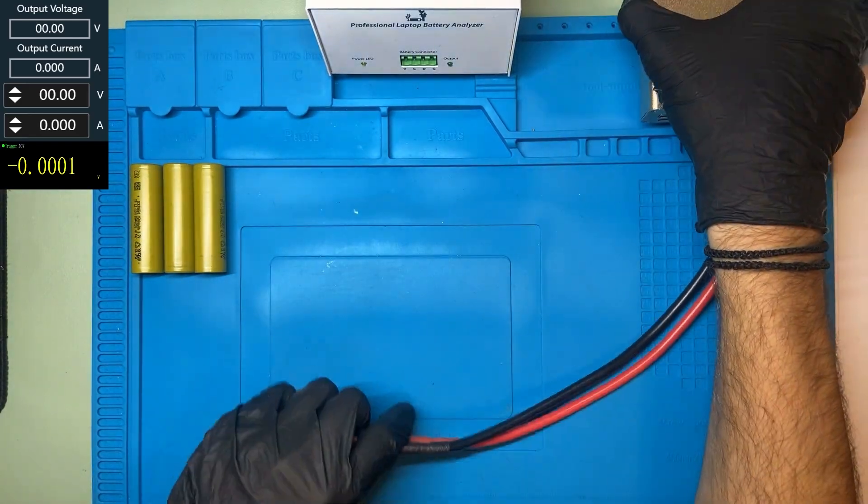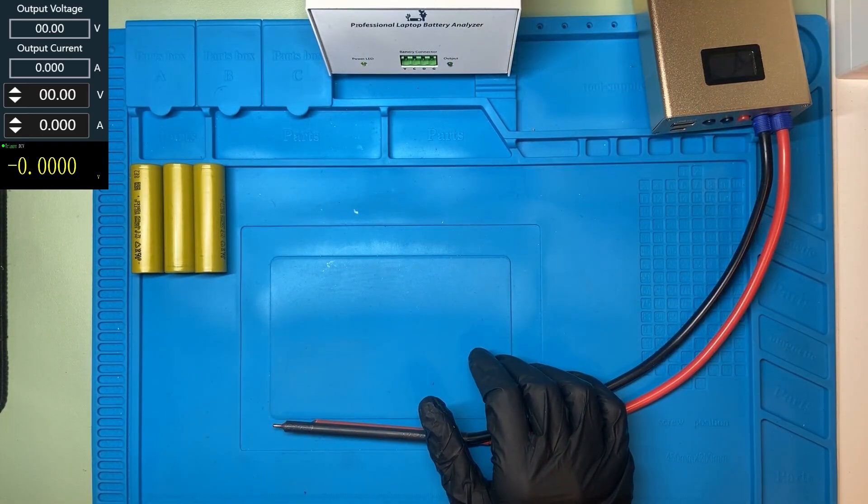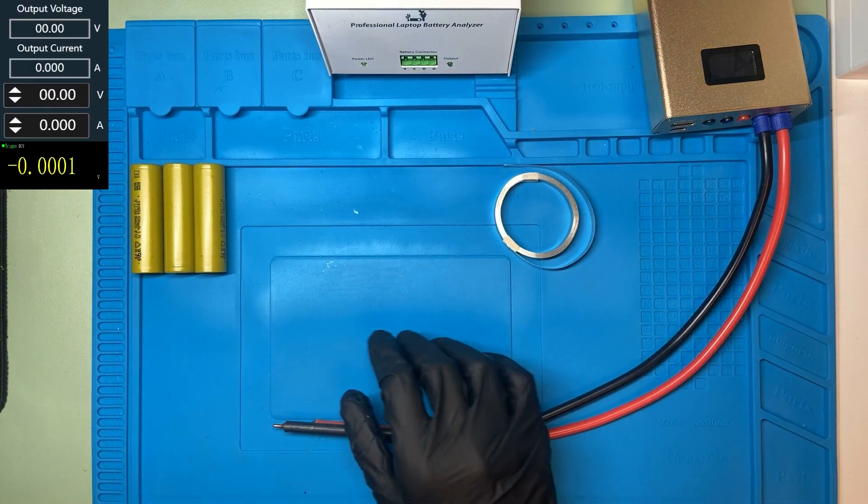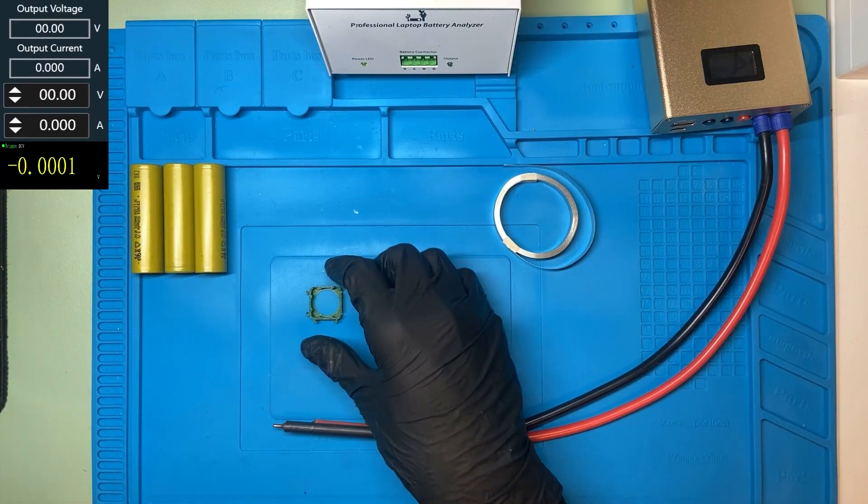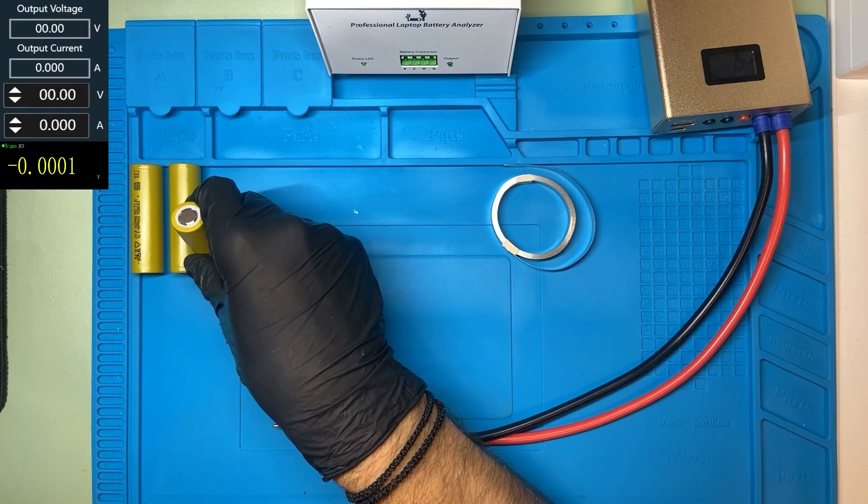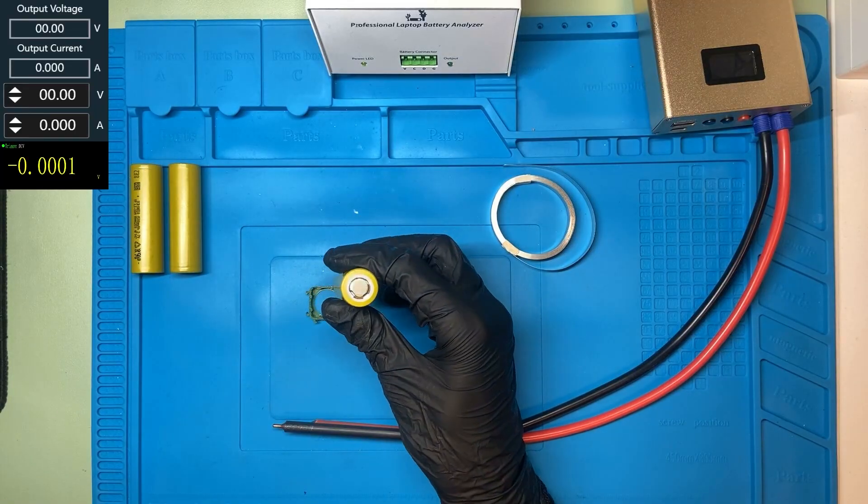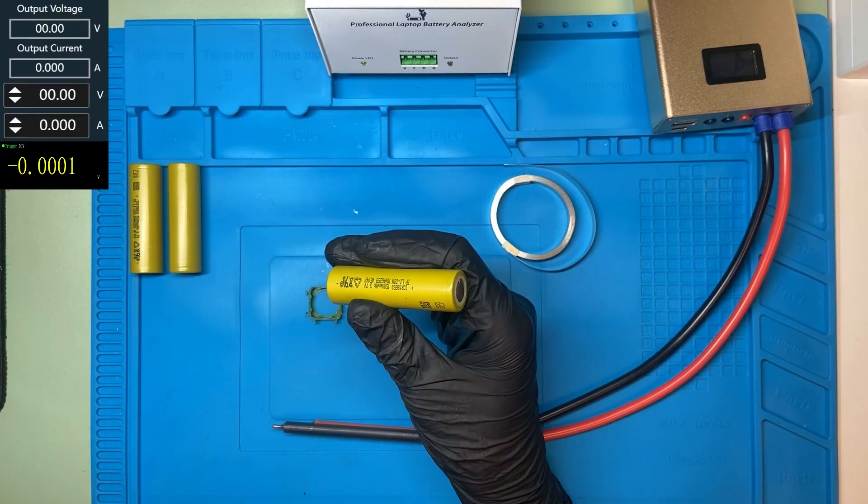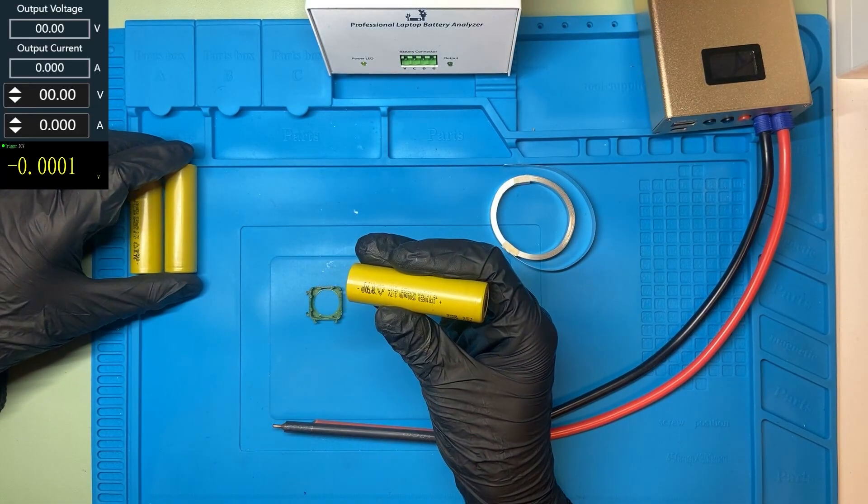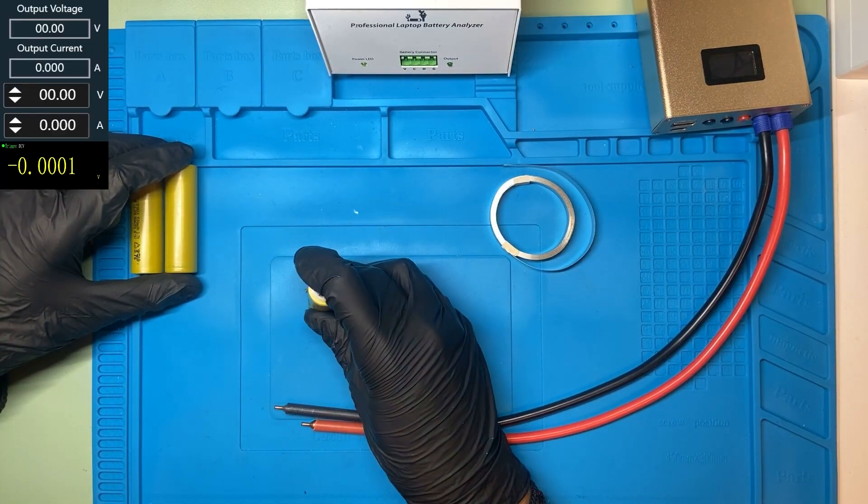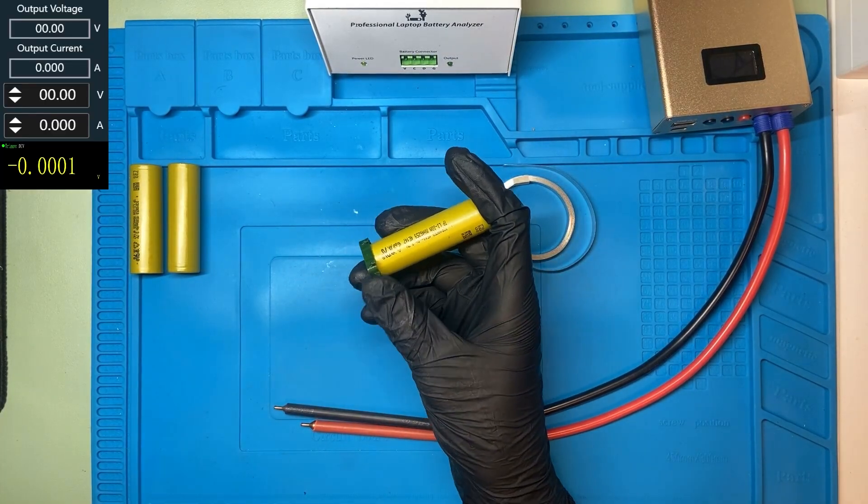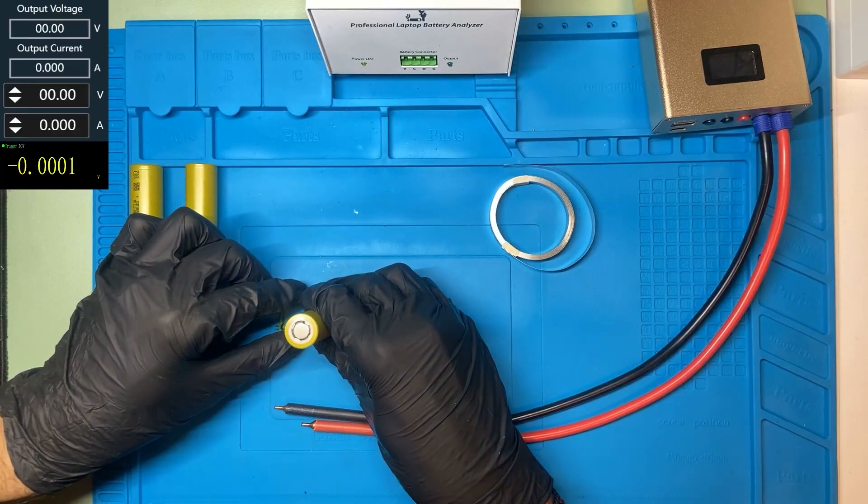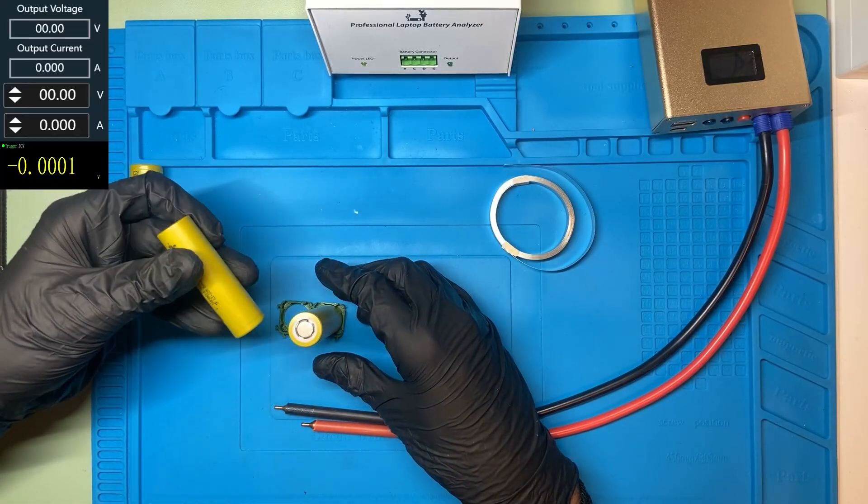This is our spot welder and this is our nickel strip of 0.1 mm. I am going to use these things in order to put the cells together. The battery will need to be placed in series. So we put the minus here. Minus is down. Next to the minus we are going to have plus.